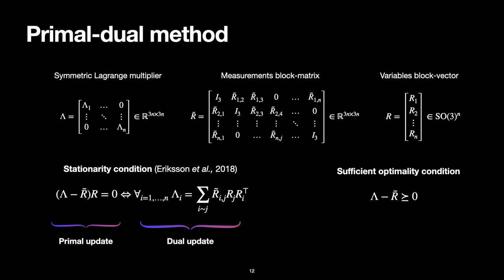We can now state the stationary condition for rotation averaging: the block vector R is in the kernel of λ minus R̃. Equivalently, each block λi is given by this sum of rotations. The one on the left will be the base for our primal update, whereas the one on the right will be used to form the dual update rule. We can also state a sufficient optimality condition as being λ minus R̃ being a positive semi-definite matrix.